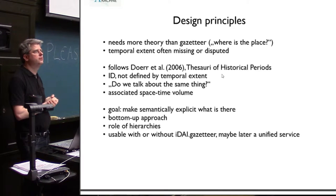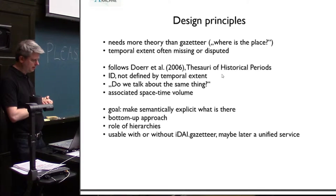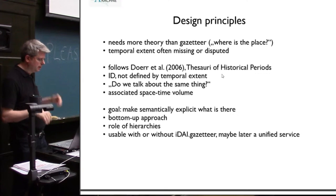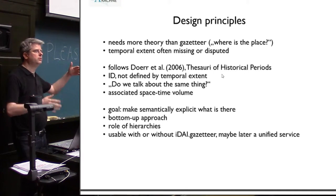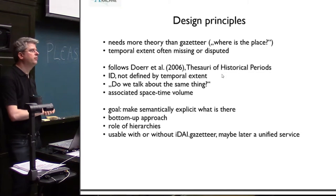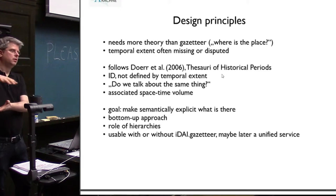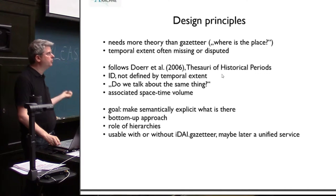Theory has not progressed much since then. What has progressed is that the original paper has an example of ten terms, and we will have a few thousands — and probably more. The important thing is that terms are not defined by their temporal extent; people might disagree about it. They have a definition and an ID, and an associated space-time volume, so they might wobble through time and space. For example, Bronze Age in the Levant and in Europe happens at different times and places.